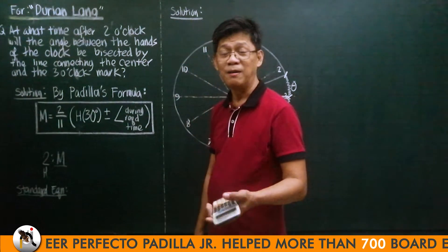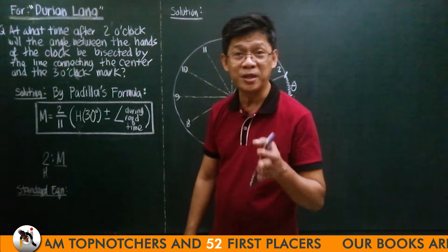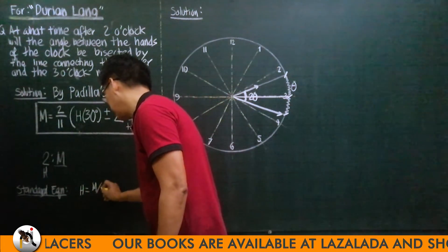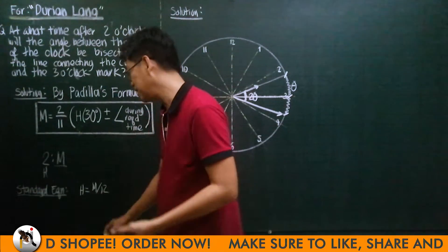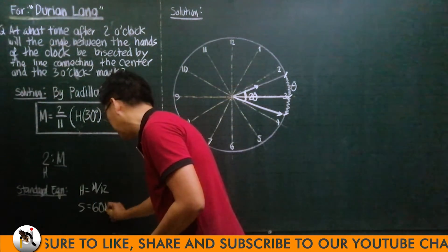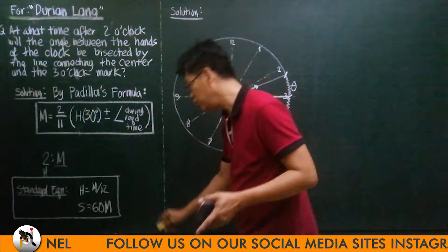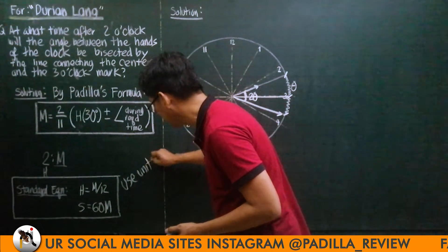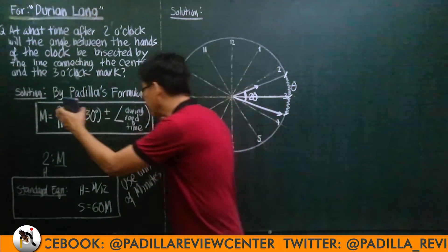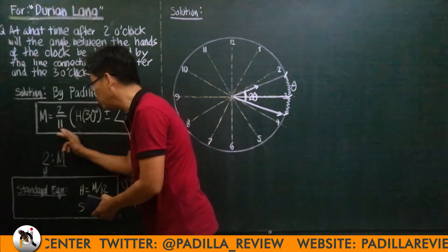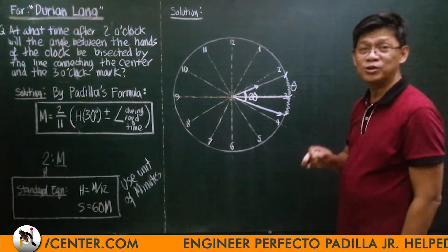This is the presentation in my book, Board Exam Guide in Mathematics. The distance traveled by the hour hand is 1/12 that of the minute hand: H = M/12. This is a given fact — the hour hand always travels only 1/12 of the minute hand. If the second hand is involved, S equals 60 times the minute hand distance. When using the standard equation, I recommend you use units of minutes so the answer is directly in minutes.